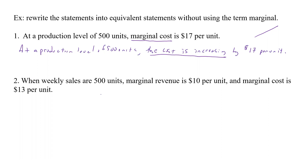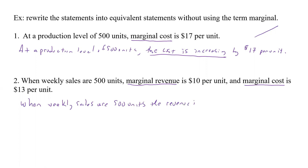When the weekly sales are 500 units, we have marginal revenue and marginal cost, so we have to do two conversions. Both are increasing since the values are positive. The revenue is increasing by $10 per unit, and the cost is increasing by $13 per unit.